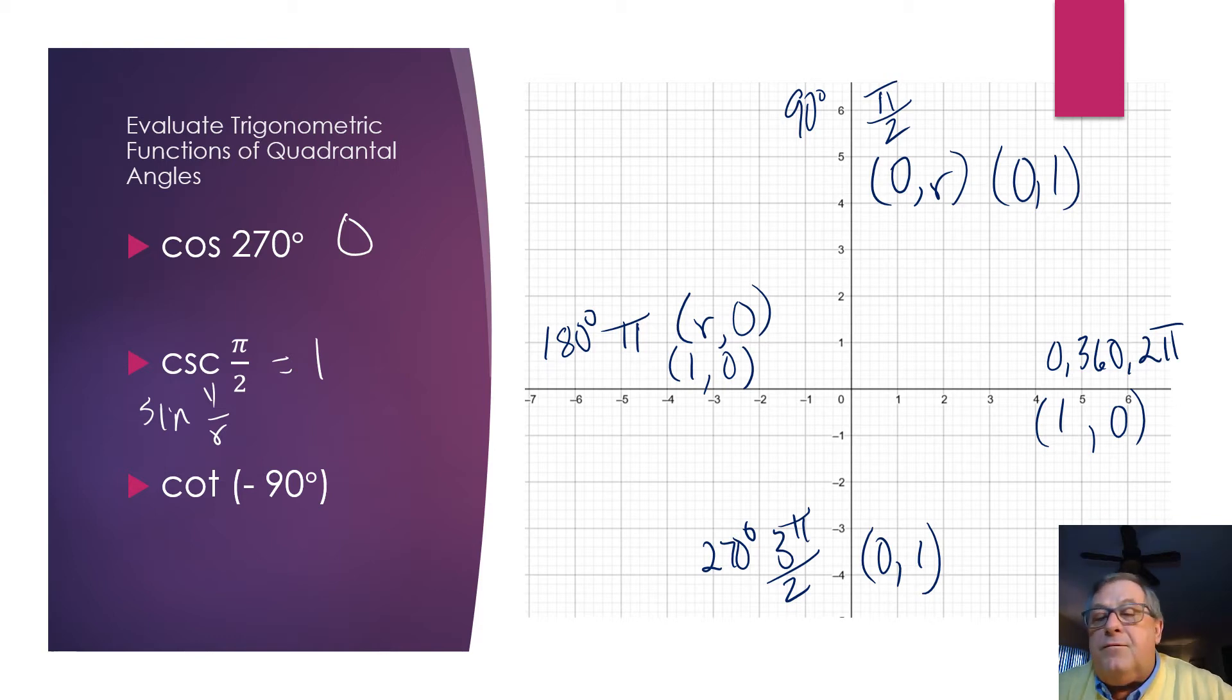Now, what about the cotangent of negative 90 degrees? This time, we're coming back this way, 90 degrees, which is also the equivalent of 270 degrees, or 3 pi over 2. So, let's see, the cotangent. Well, let's start with the tangent. The tangent is y over x. And so then our cotangent is going to be x over y. Well, at this point, we've got 0 over 1. So, our cotangent at negative 90 degrees is 0.